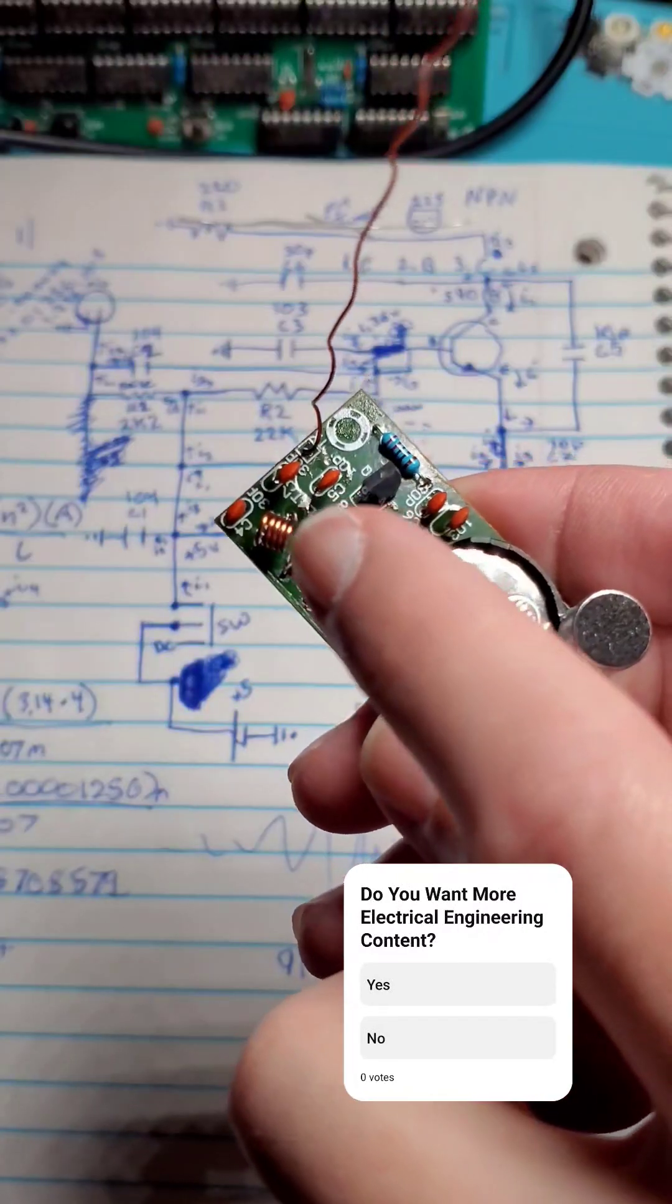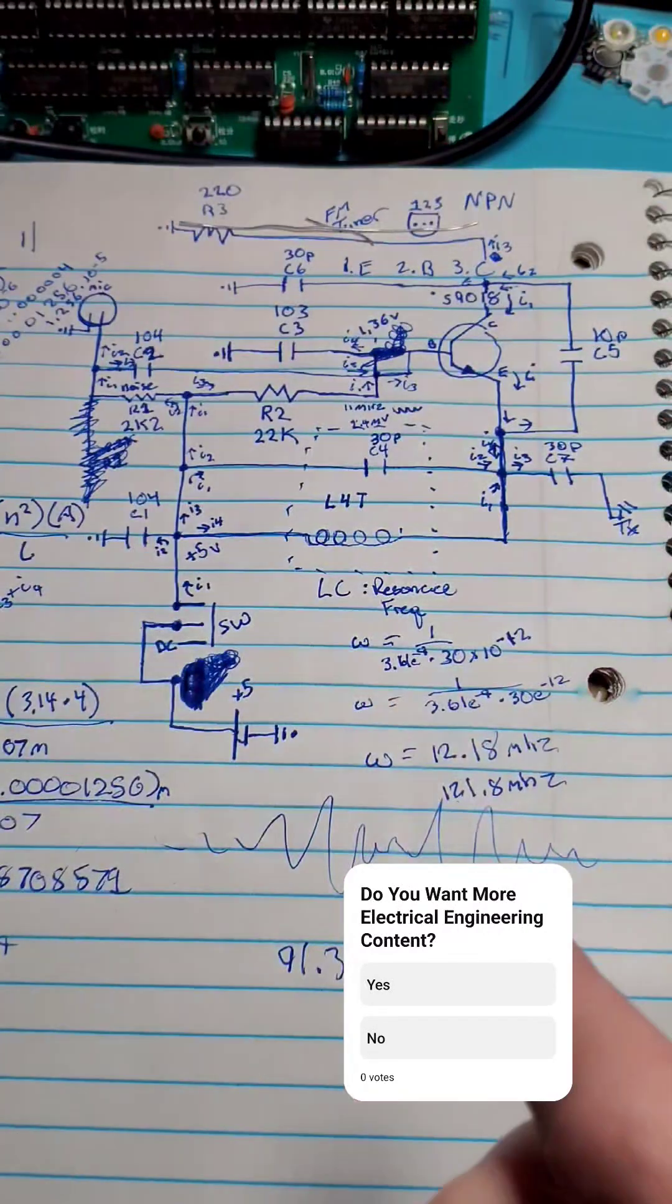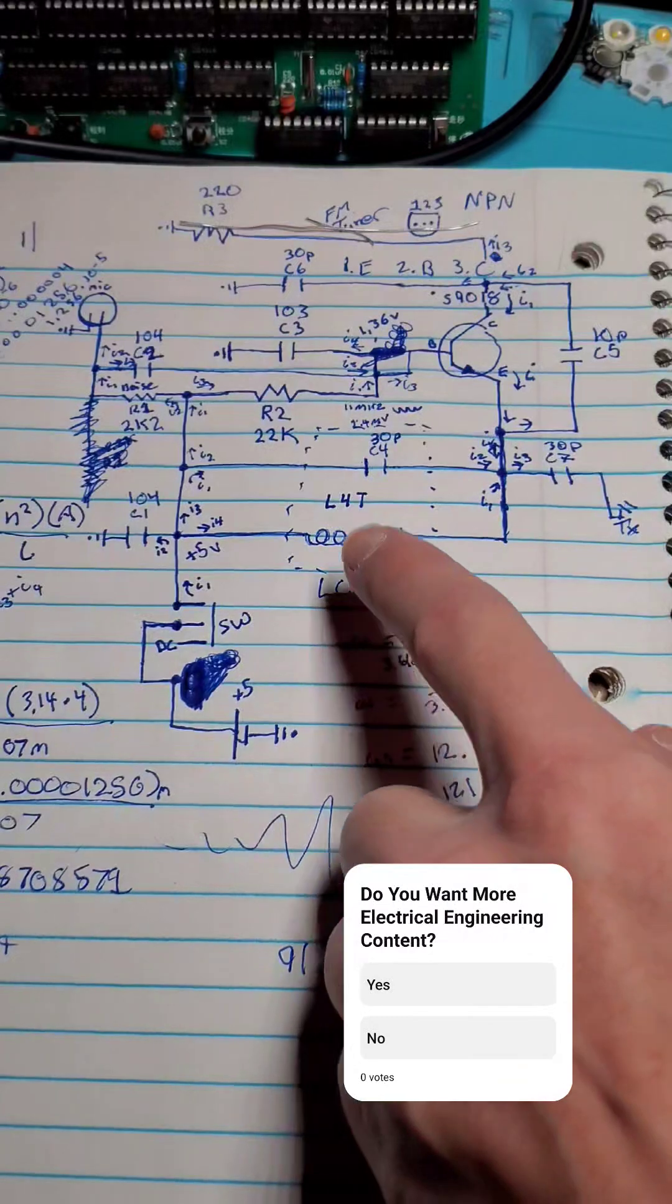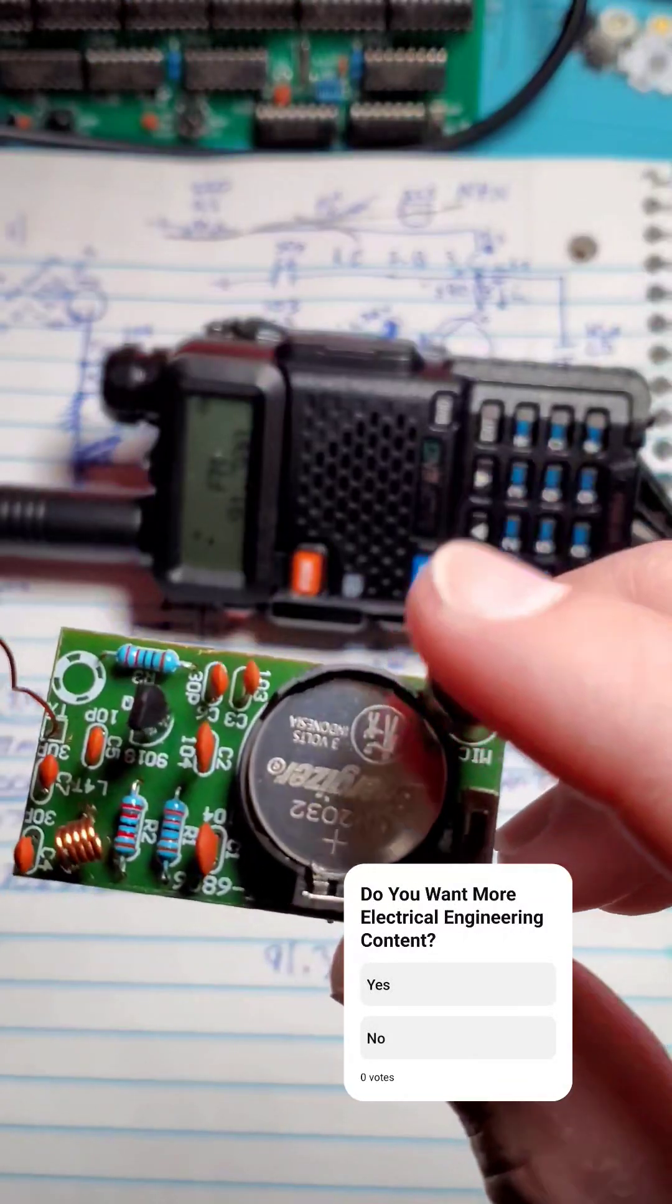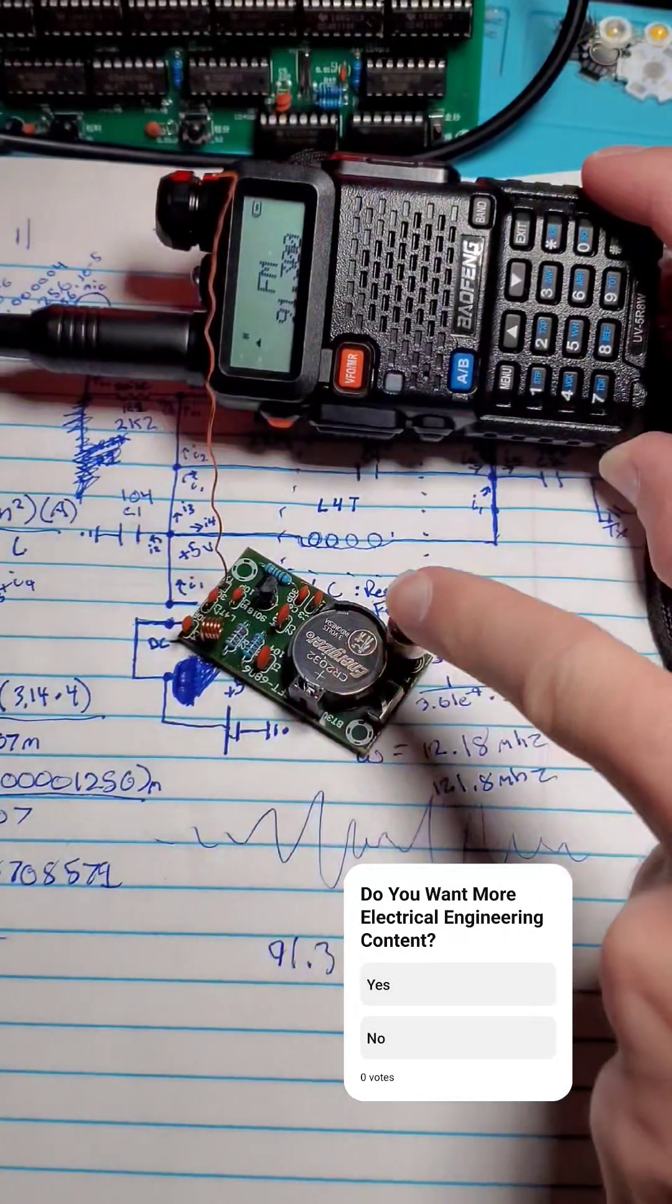We can now adjust our 4-turn coil to tune to the exact FM frequency we wish to transmit at. As you can see here, I've taken my Maofang and tuned it to 91 point.